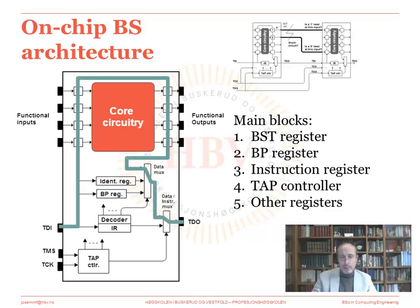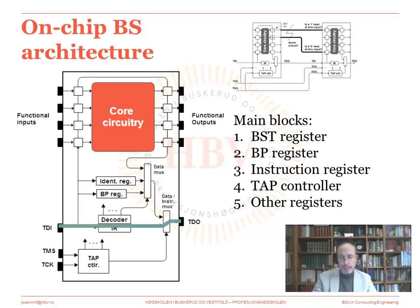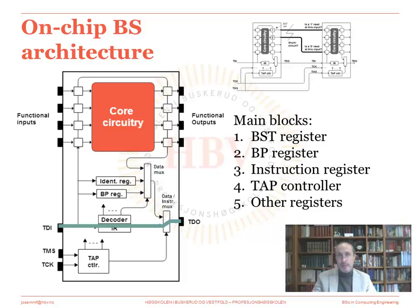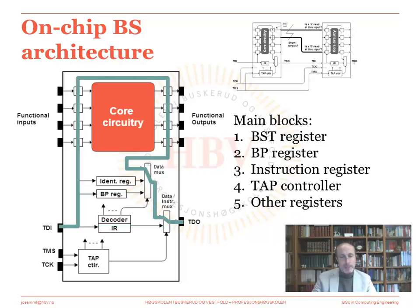How do we control the data multiplexer? As you can see here, it is controlled from another register that is called the instruction register. What we should do in the beginning is set this multiplexer to the lower input, as you see here, and then shift in a bitstream that will define the operating mode of this multiplexer and some other blocks in the test logic. This is actually the first thing that we should do — shifting the so-called instruction that will define how the data multiplexer operates and what will be the selected test data register.